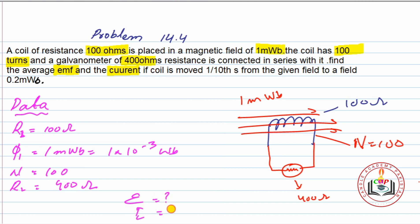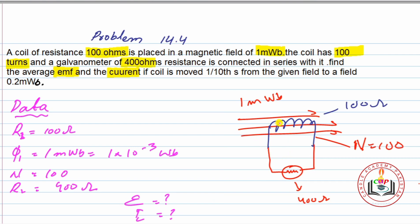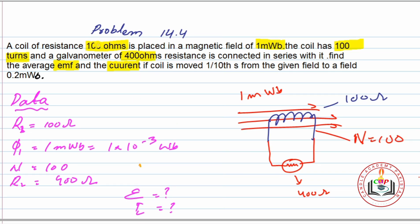EMF کتنی ہے اور current کتنا flow ہو رہا ہے — اس EMF کے نتیجے میں galvanometer سے کتنا current جائے گا اور اس کی سوئی کیا دکھائے گی۔ اس coil کے ساتھ series میں 400 ohms کا galvanometer لگا ہوا ہے، اپنی resistance بھی 100 ohms ہے، number of turns بھی 100 ہیں۔ Time: Δt = 1/10 second = 0.1 second۔